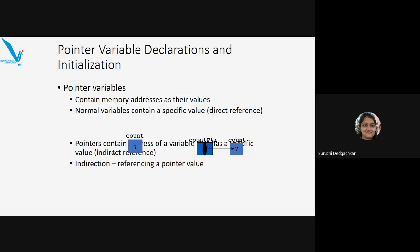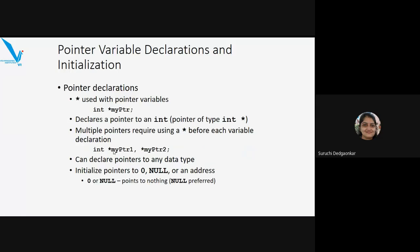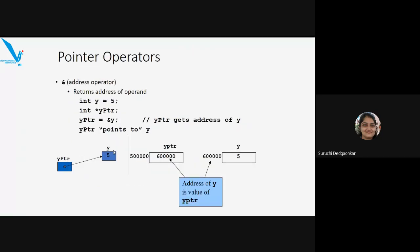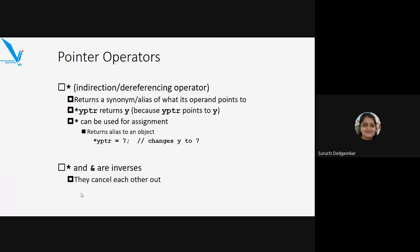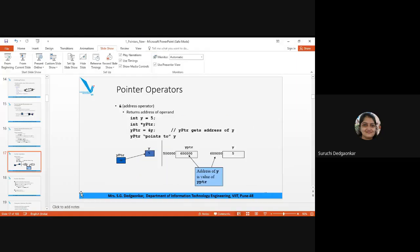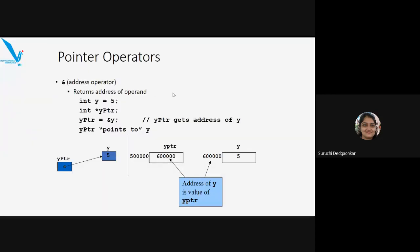We declare pointers like: int *myptr1, etc. In a particular program, there is a variable y and a pointer yptr. The correct sequence is: declaration of pointer, assigning the value to the pointer, and then using it. Also, asterisk and ampersand are inverses — they cancel each other out. So *(& x) is simply x, the value of variable x.